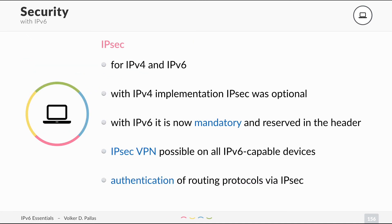IPsec is a security mechanism available for both IPv4 and IPv6. In IPv4 it was set up on top of the protocol, while in IPv6 it has been part of the protocol from the beginning. It is now mandatory and reserved in the header. IPsec VPN is a really common type of VPN and is now possible on all IPv6-capable devices. Routing protocols and other things can also use authentication based on IPsec.